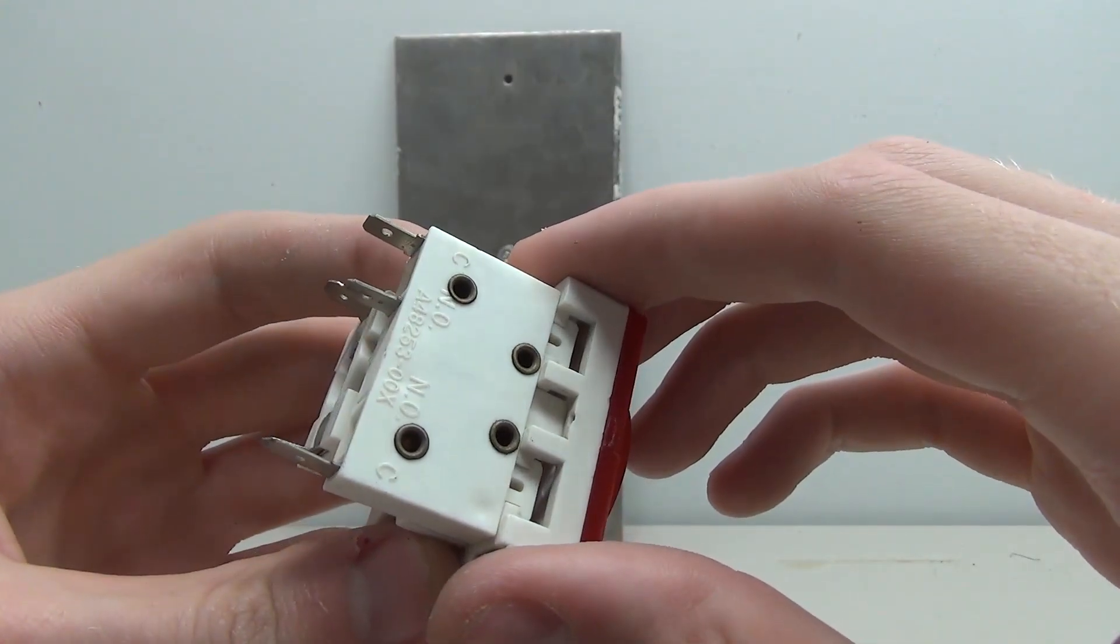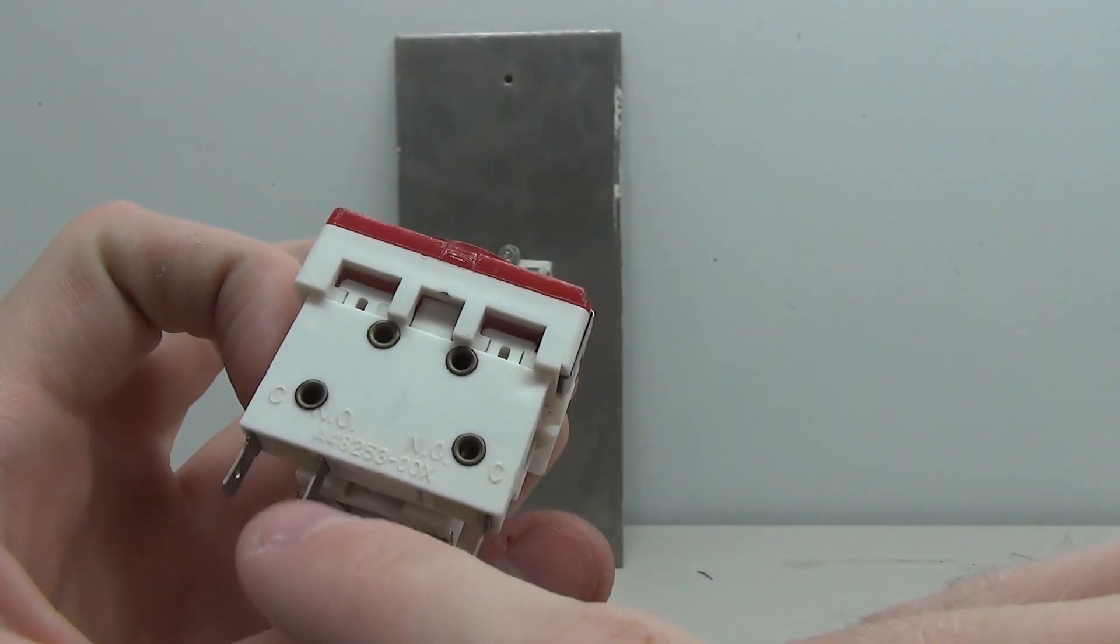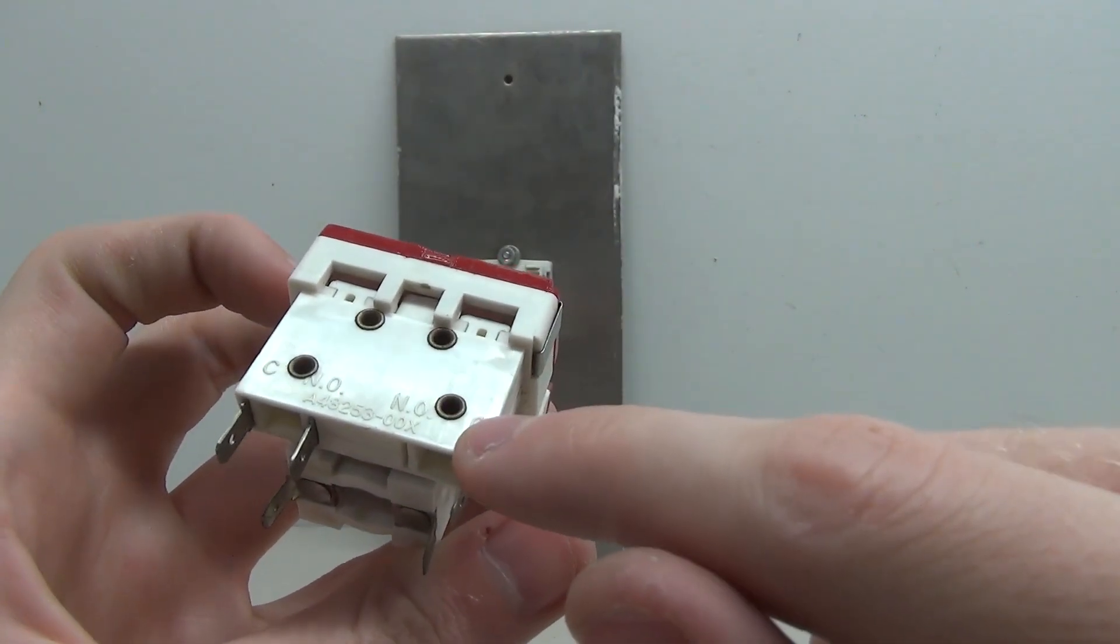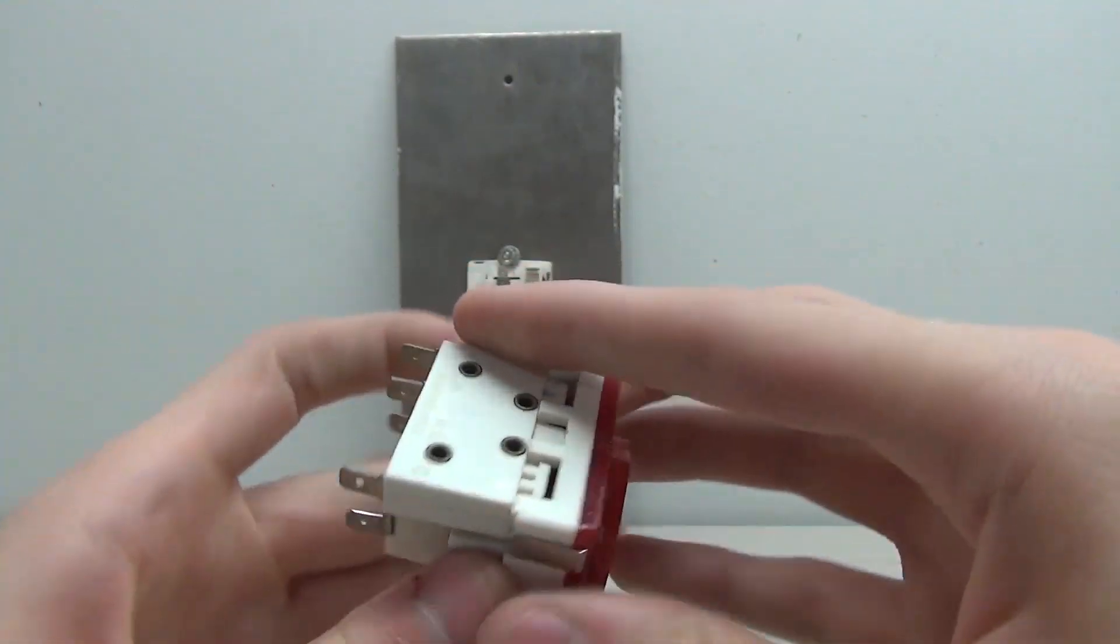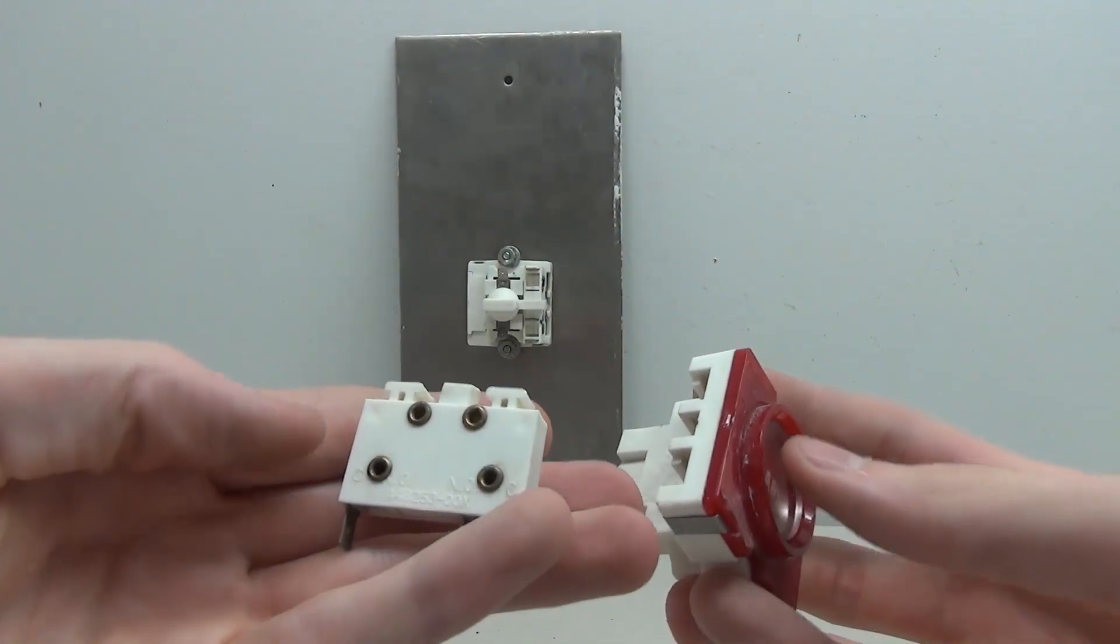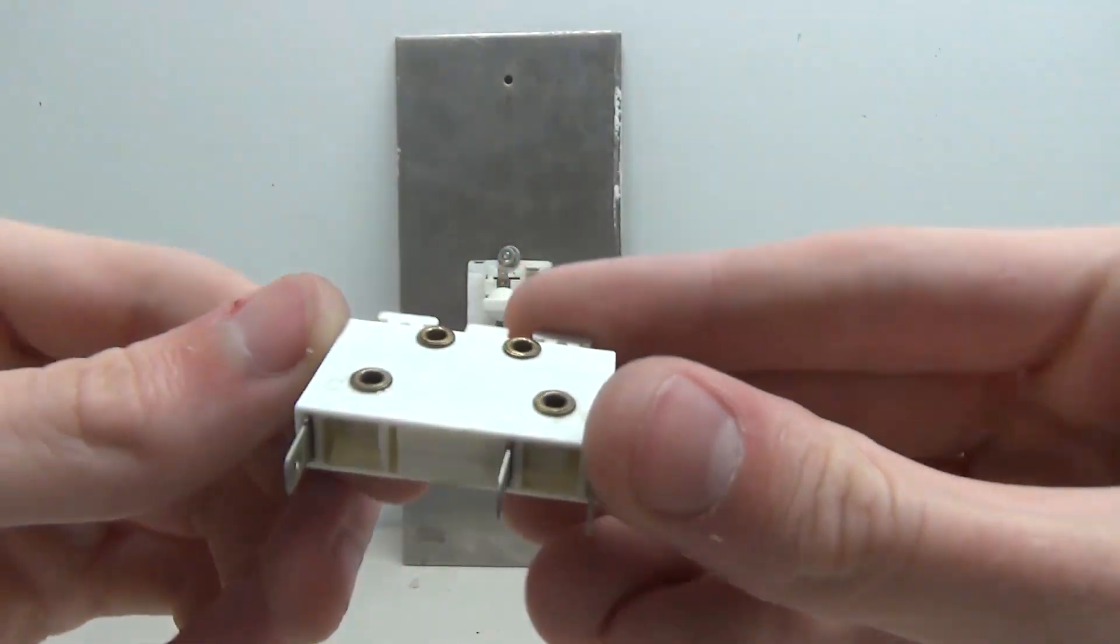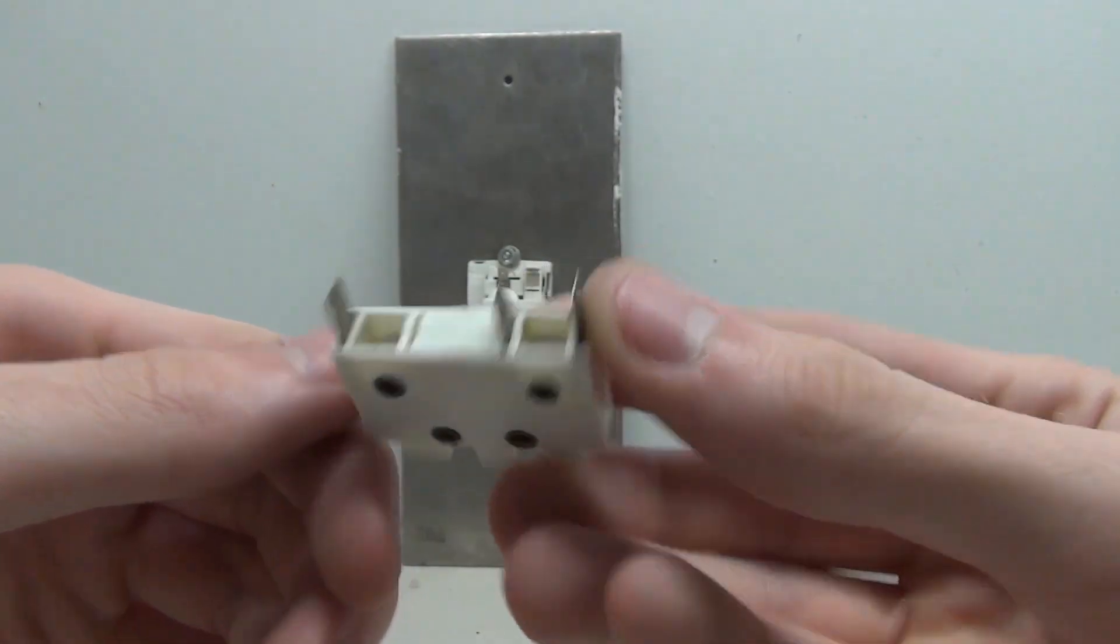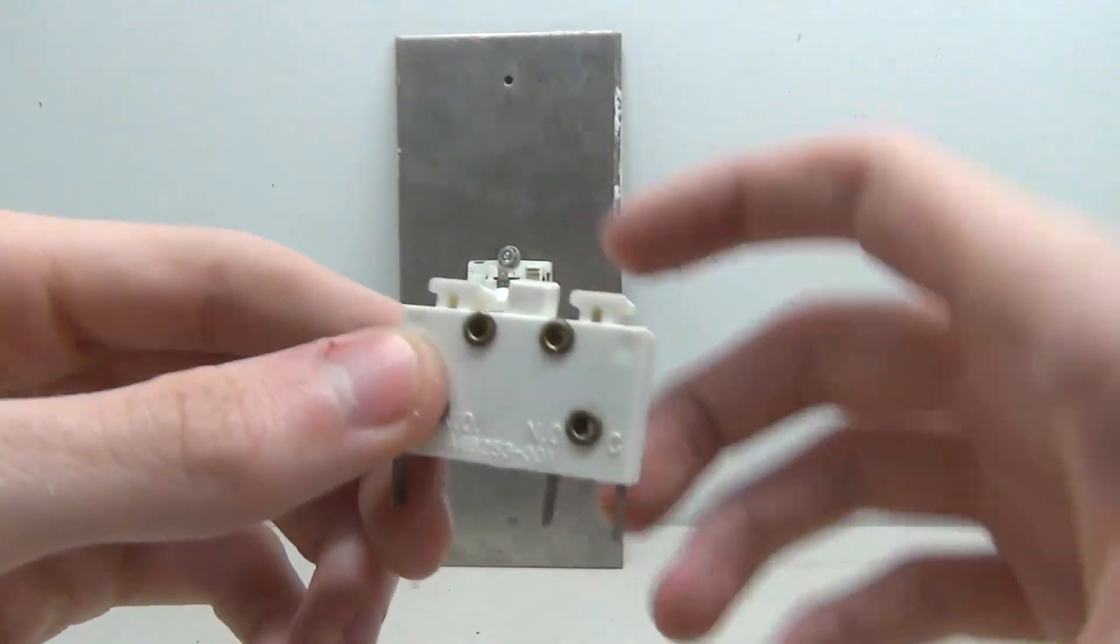On this side we have the contact, this is the actual switch, and we can see here common, normally open, and another common. So this is kind of an interesting switch, and we can actually slide this off by pushing in the button and pulling on it and it pops right out. So here's the little switch, it's almost kind of like a micro switch. You can see I press down on it and it works.